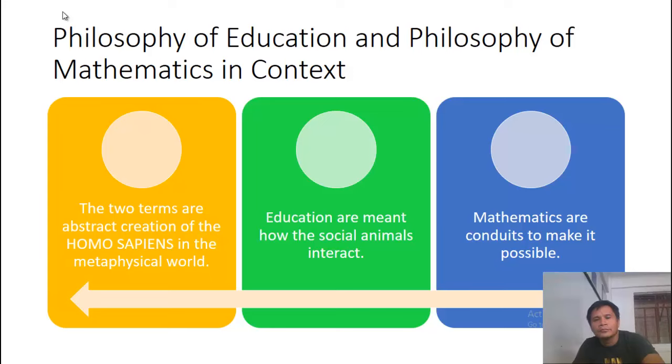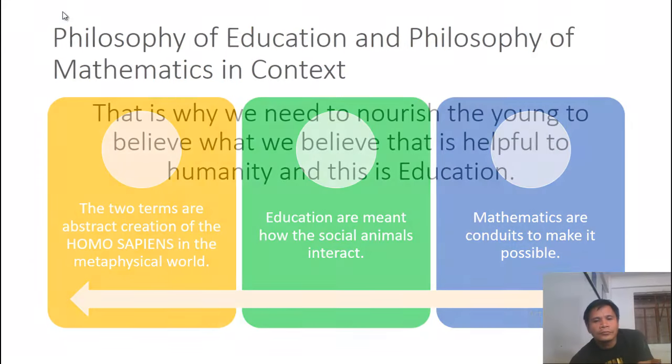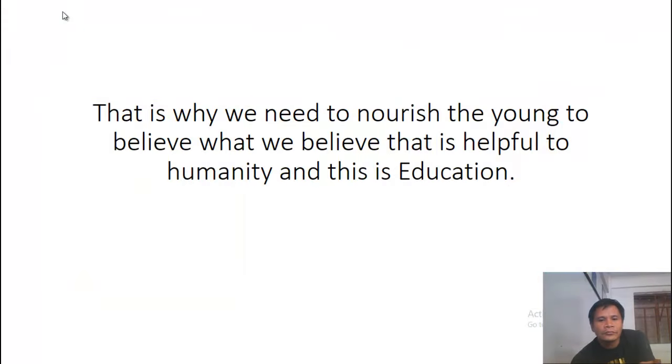Philosophy of education and philosophy of mathematics in context. The two terms are abstract creations of the Homo sapiens in the metaphysical world. Education is meant for how the social animals interact. Mathematics are contents to make it possible. That is why we need to nourish the young to believe what we believe that is helpful to humanity, and this is education.